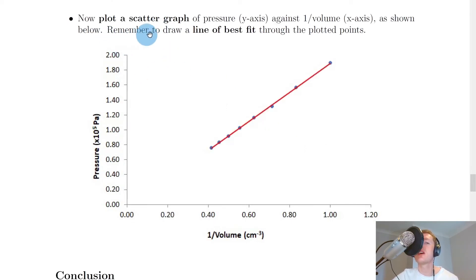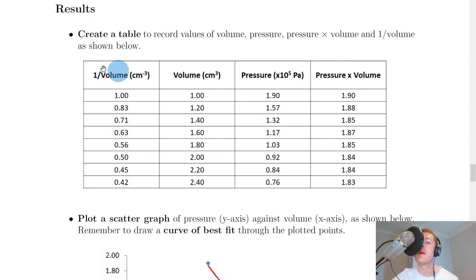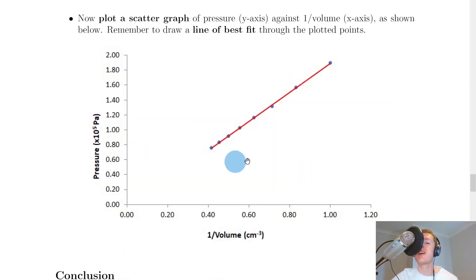To obtain a more useful relationship, we need to plot another graph. Now plot a scatter graph of pressure on the y-axis against 1 divided by the volume on the x-axis. Remember to draw a line of best fit through the plotted points. The 1 over volume column is found from doing 1 divided by each value in the volume column. This enables us to plot pressure against 1 over volume. Looking at the graph, we get a nice straight line relationship, a nice linear relationship for pressure against 1 divided by volume. At National 5 level, this is much more useful for telling us the relationship between pressure and volume.